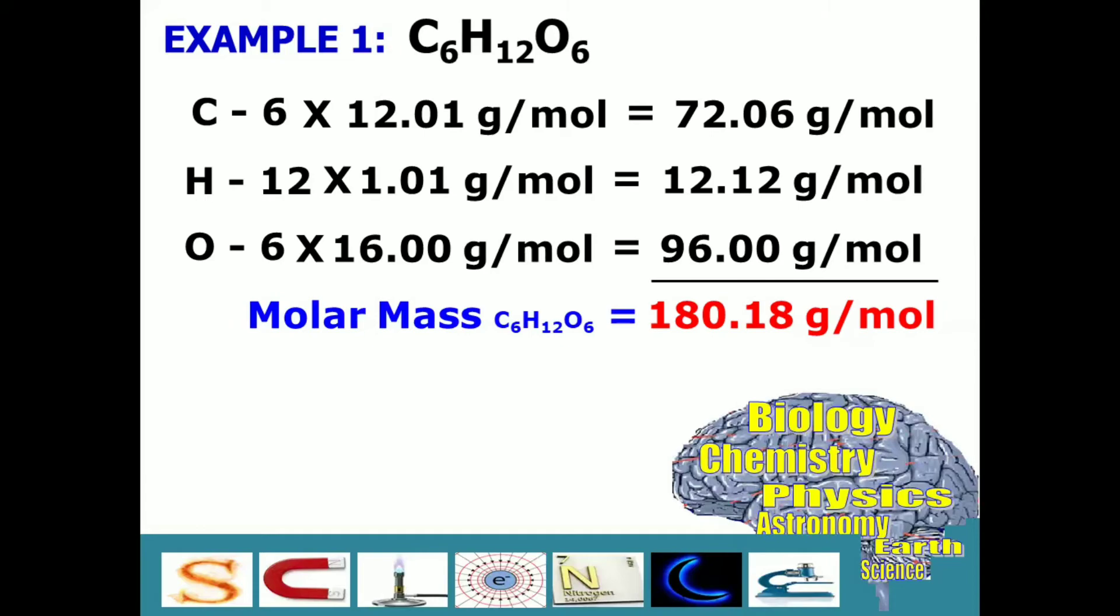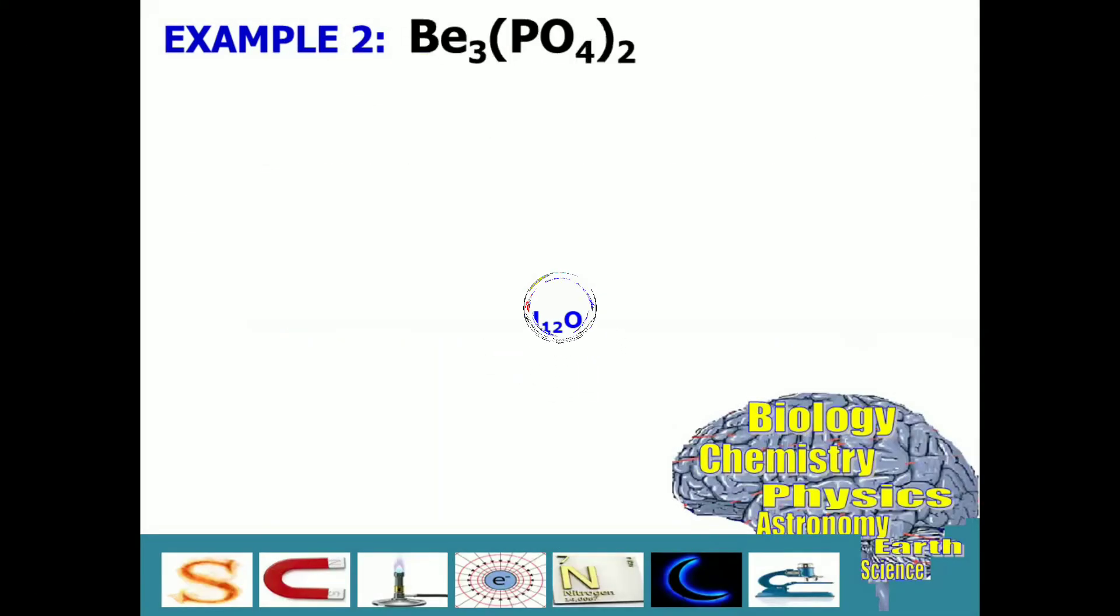Let's proceed to example number two. How about for compounds that are having parentheses, just like this one: Be3(PO4)2. We name it as beryllium phosphate.